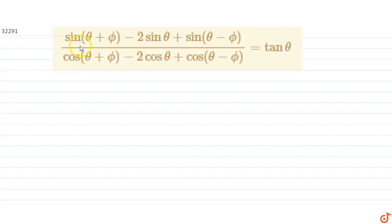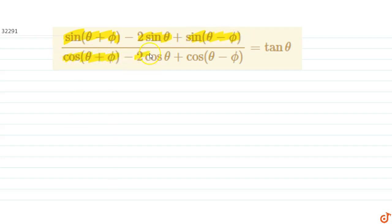In this question we have to prove that sin(θ+5) minus 2sin θ plus sin(θ-5), whole divided by cos(θ+5) minus 2cos θ plus cos(θ-5), is equal to tan θ.